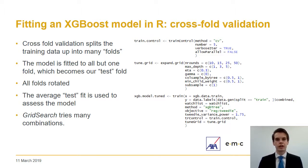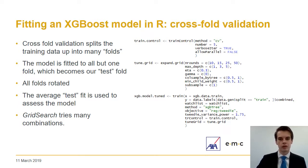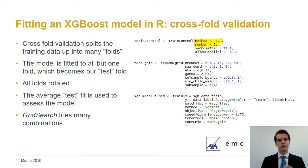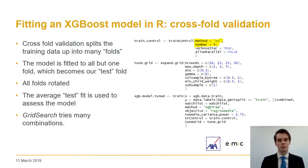Cross-fold validation automates and improves the process of splitting our data into test and train. We're doing a five-fold cross-validation method. Caret will use 20% of the data as the holdout sample and train on the remaining 80%. Once it's fitted the model it rotates the test set, selecting a different 20% each time, and runs the model again. It does this five times so that everything in our dataset is in the test set once. This produces a much more robust checking process and a more accurate model.